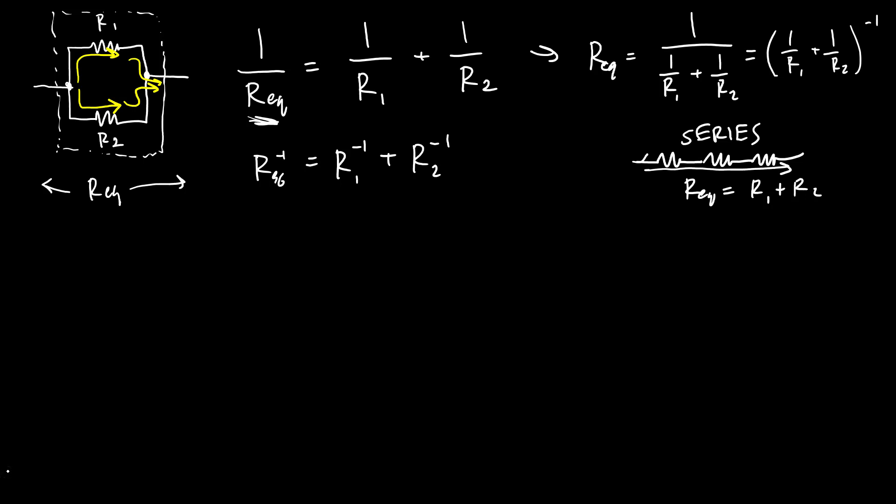So if you keep adding more resistors, again you can write this more generally. Say you have R1, R2, up to some number of resistors Rn, then you can write this using summation notation, where in this case the equivalent resistance, one over the equivalent resistance of that network is the sum from i equals one to n of one over Ri.